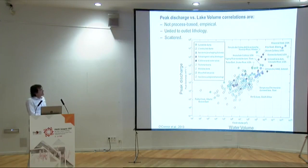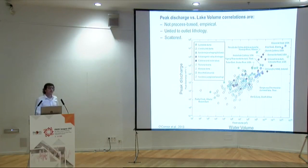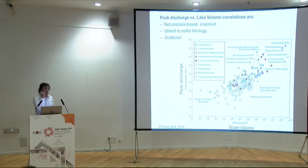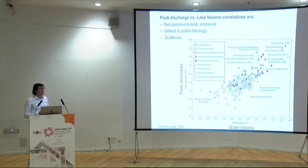The problem is that if you do that regression, for a given volume of the lake you will still get three to four orders of magnitude of uncertainty. And when you go to the politician or the decision maker and tell them there is going to be a flood but it's going to be between 1,000 and 10,000 cubic meters per second, they don't like it.